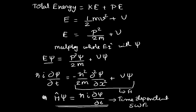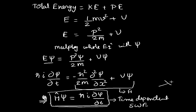This is the time-dependent Schrödinger wave equation for one dimension. For three dimensions, we would include d²psi/dx², d²psi/dy², and d²psi/dz² respectively. This is one of the simplest methods to derive the time-dependent Schrödinger wave equation, though several other derivation approaches exist. Hope the derivation was clear — thank you very much.